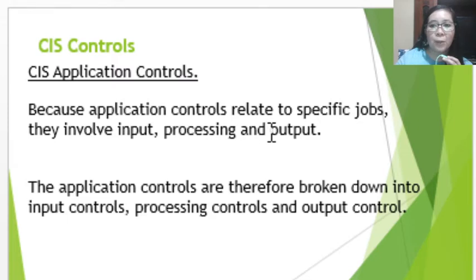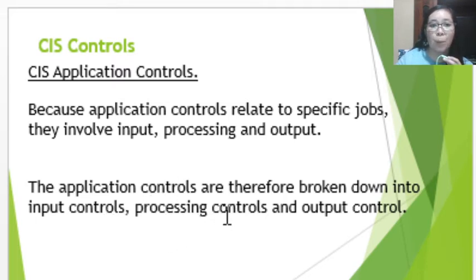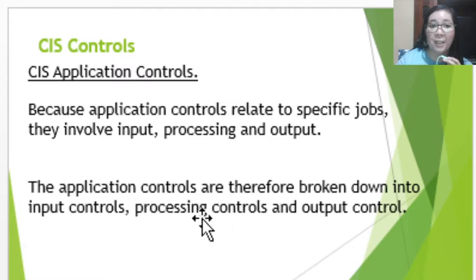Because the application controls relate to specific jobs, they normally involve the input, processing, and output cycle. So these application controls are broken down into input controls, processing controls, and output controls.